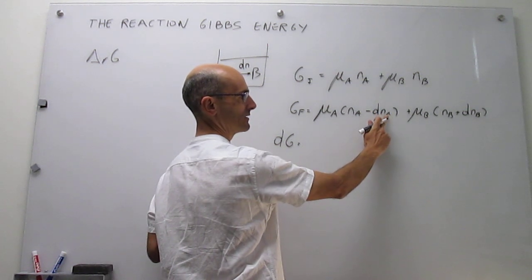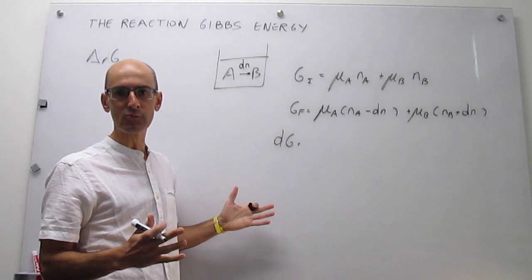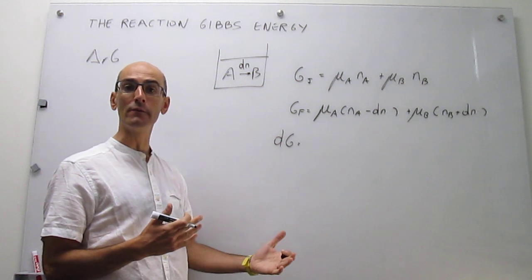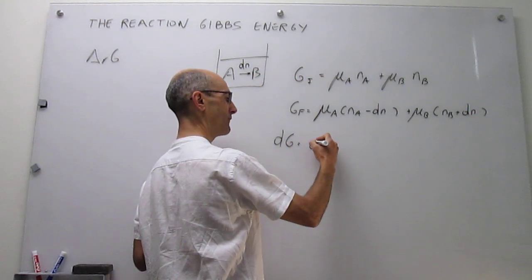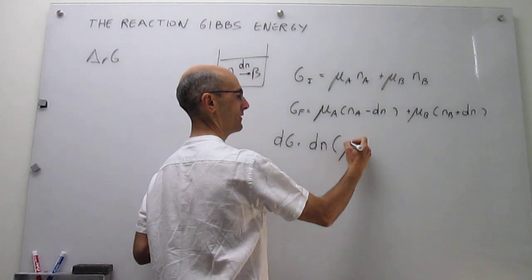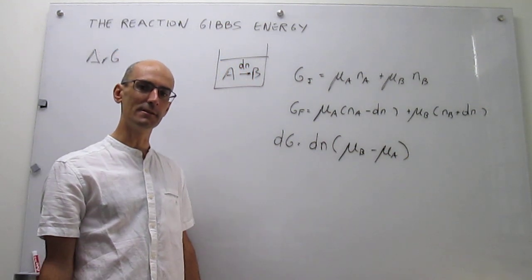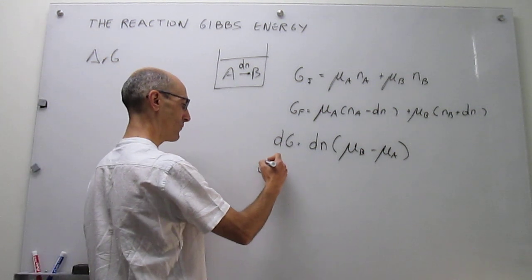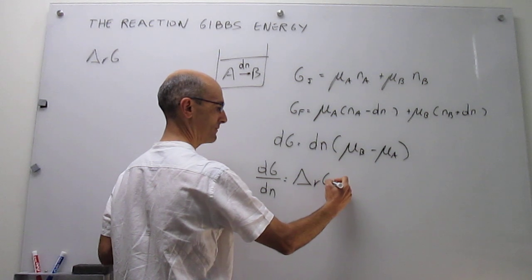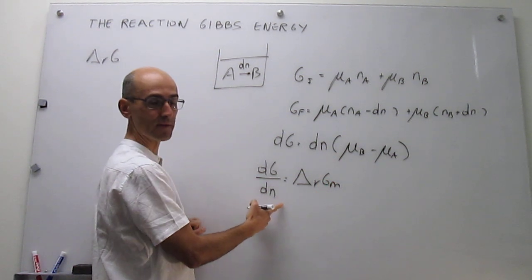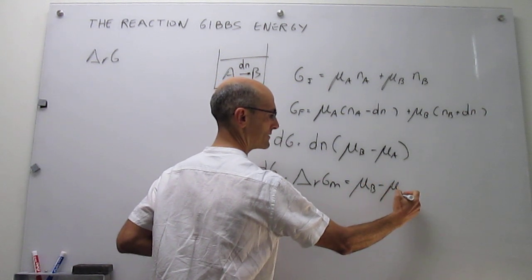Taking the common factor of the differential of n — which does not depend on whether we're talking about substance A or B — we find that dG equals the differential of n times the difference between the chemical potential of B and the chemical potential of A. This sets up our definition of the reaction Gibbs energy: dG/dn, the molar reaction Gibbs energy, is simply the chemical potential of B minus the chemical potential of A.